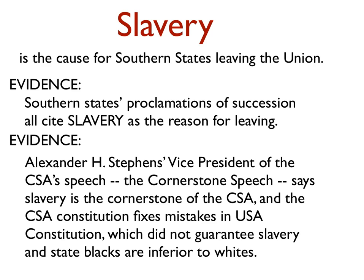The second piece of evidence is something called the Cornerstone Speech. It's given by Alexander H. Stevens, the Vice President of the Confederate States of America. He's talking about the Confederate States of America and its Constitution, and he says it was necessary to create the Confederacy because it was necessary to write a new Constitution and fix the horrible mistakes in the U.S. Constitution. Those horrible mistakes were: not guaranteeing slavery forever, and not stating in the U.S. Constitution that blacks are inferior to whites and not deserving of equal rights.